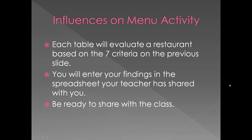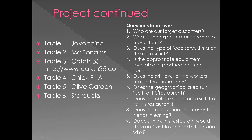You're going to do a quick activity. Each table will evaluate a restaurant based on the seven criteria from the previous slide, and questions have been written for you so you don't need to panic. Your teacher is going to share a spreadsheet with you, and you'll enter everything into that spreadsheet and then be ready to share it with the class. Table 1 is going to do Javaccino, our coffee bar. Table 2, McDonald's. Table 3, Catch 35 — a restaurant in downtown Chicago, and there's their website. Table 4 is Chick-fil-A. Table 5, Olive Garden. And Table 6, Starbucks.